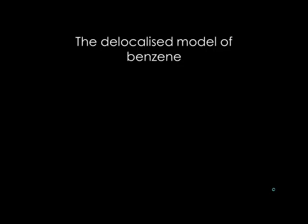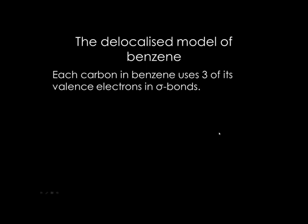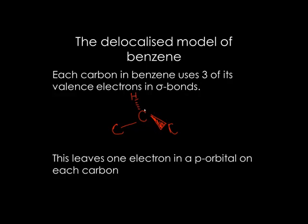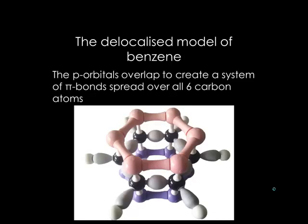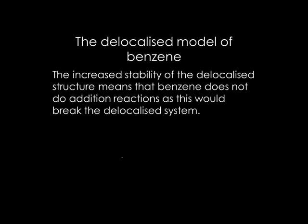We come to the delocalized model of benzene. It is now thought that there is a delocalized pi bond over the benzene ring. Each carbon uses three of its valence electrons to make sigma bonds, leaving one electron in a p-orbital on each carbon, as can be seen here. The p-orbitals then overlap to create a system of pi bonds which spread over all six carbon atoms, as shown in this diagram. The pi system is delocalized, and so it is more stable than three localized double bonds.